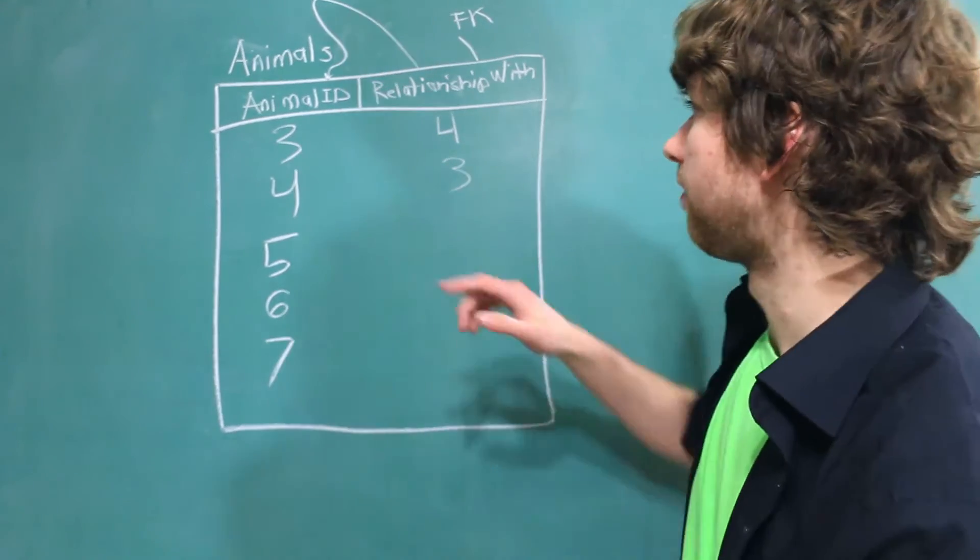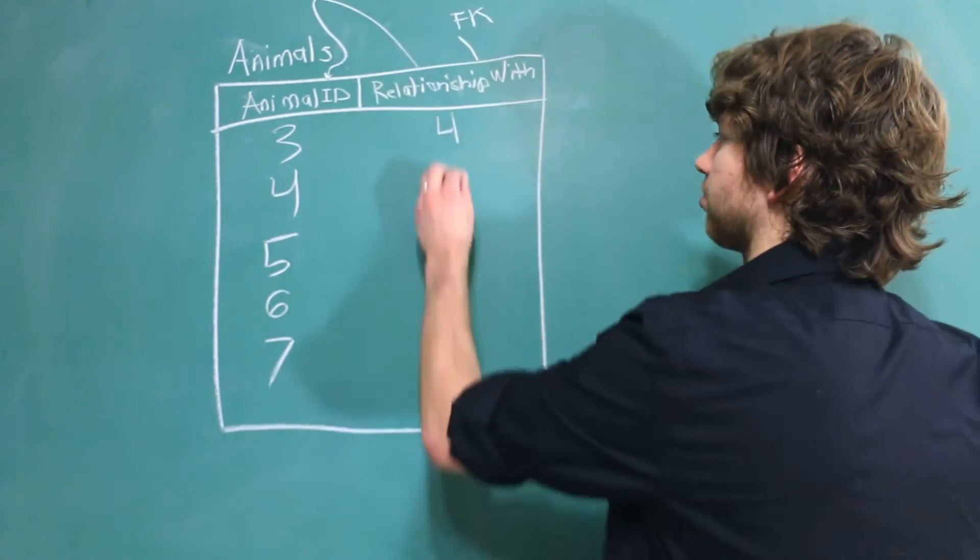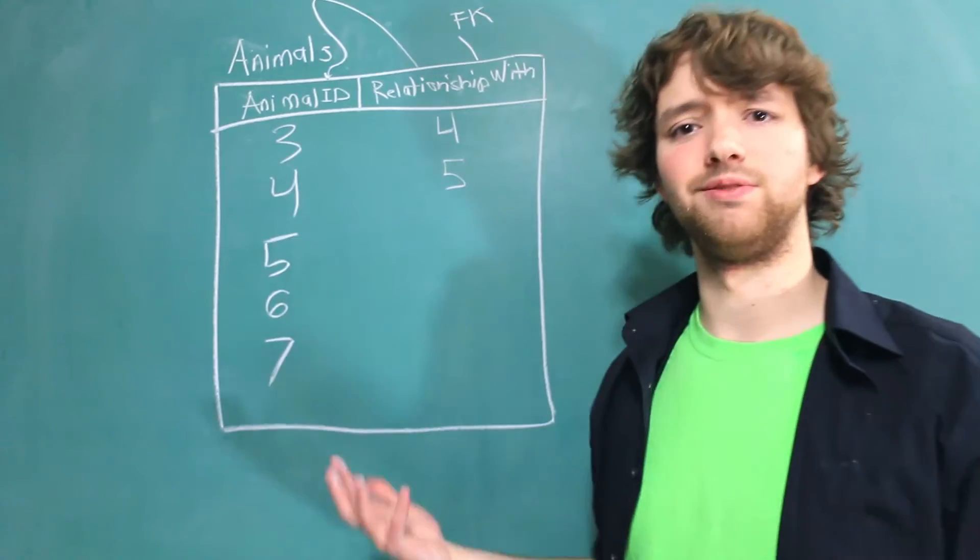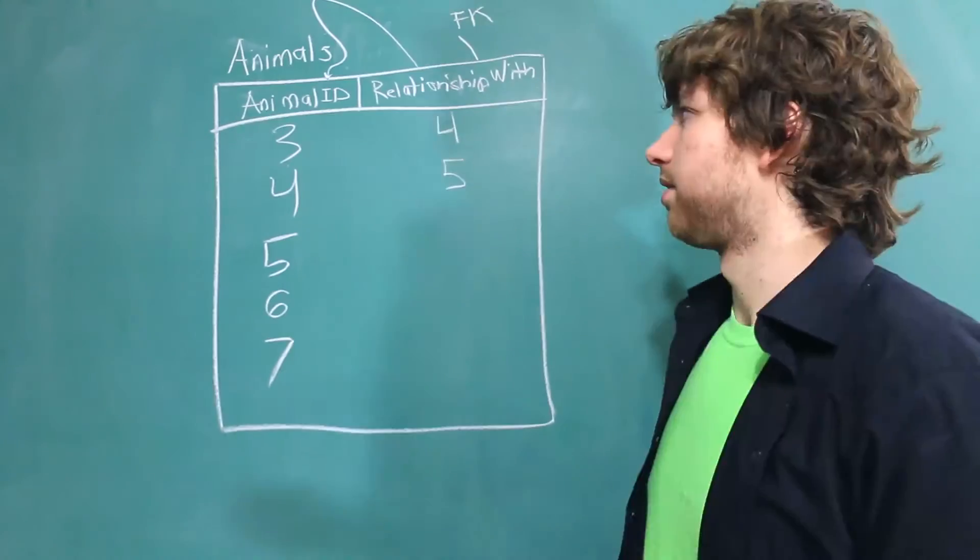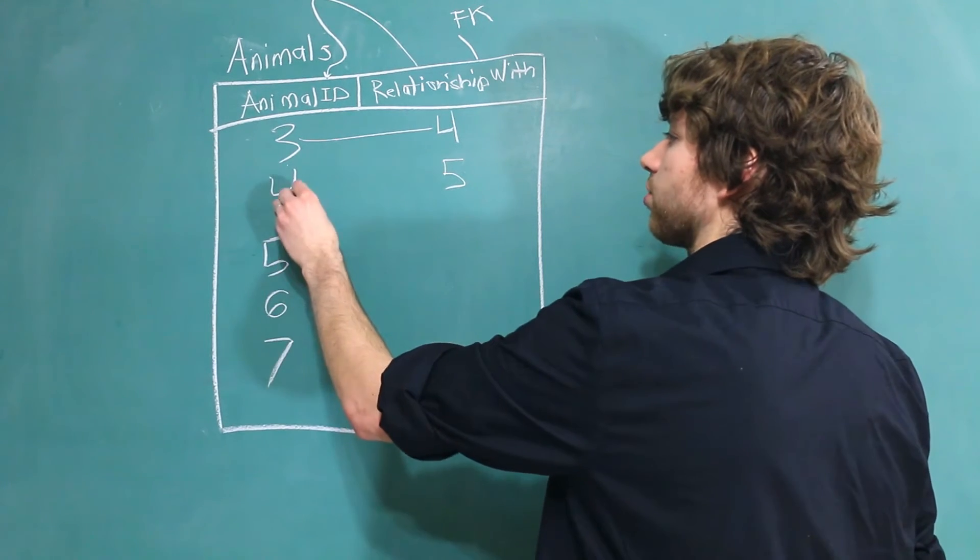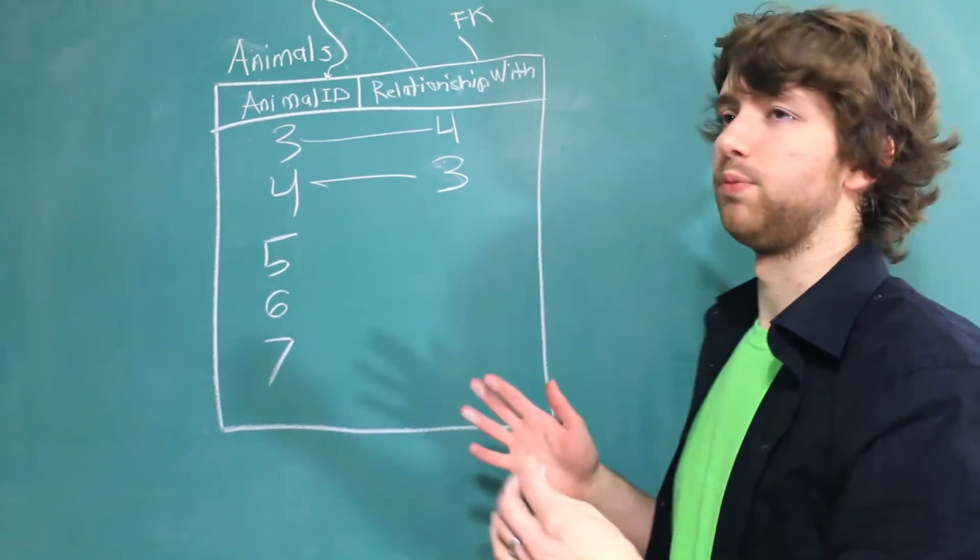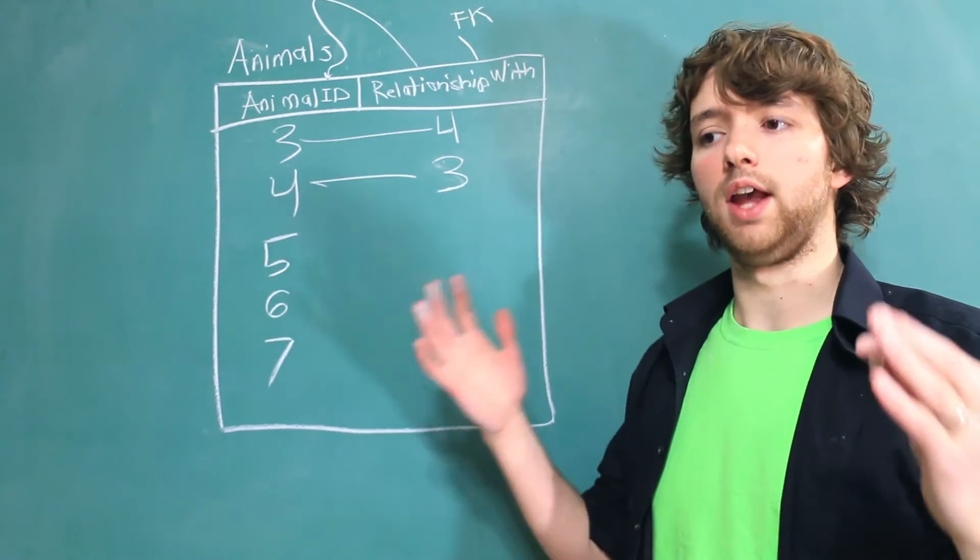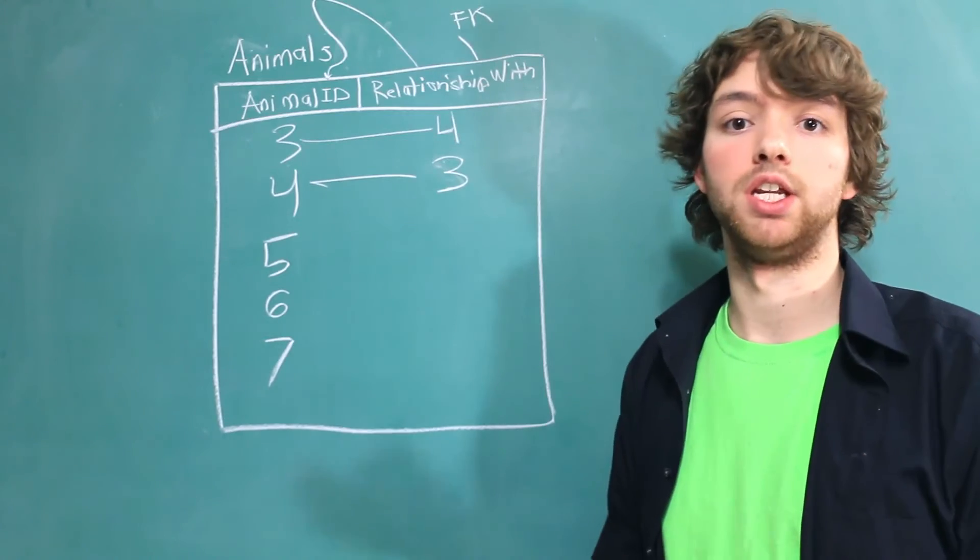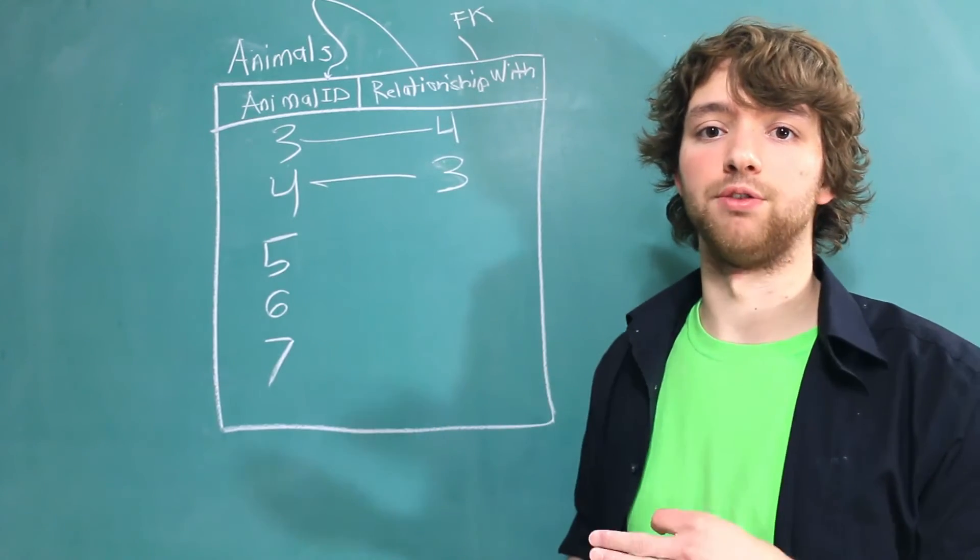This can introduce anomalies. For example, three could be in relationship with four and four in a relationship with five. And now it's this chain and that's not the way I envisioned this dating website to work. So because there's an association here, you can see three is associated with four and four should also be associated with three. This would be a good example of when we should use an association table or a table inside of a many-to-many relationship, an intermediary table.